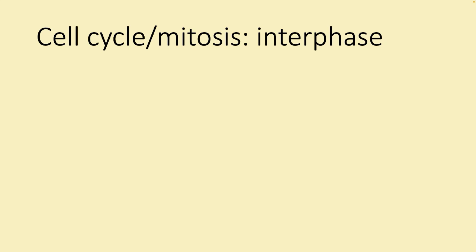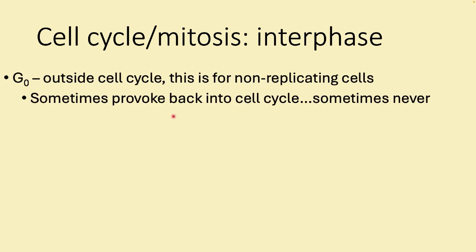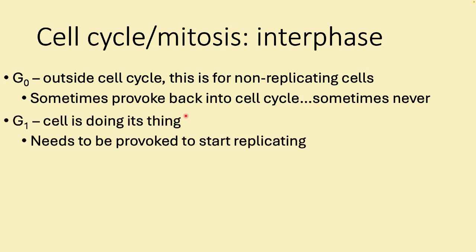The point of interphase is to get ready to divide the cell. These phases are things we can't visualize, so we need chemical tricks to know what's going on. There's a phenomenon called G0, outside of the cell cycle, for non-replicating cells. In animals, skeletal muscles and neurons can't divide because of how they're built, so they exist outside the cell cycle in G0. Some cells stay in G0 but can be provoked back into the cell cycle.